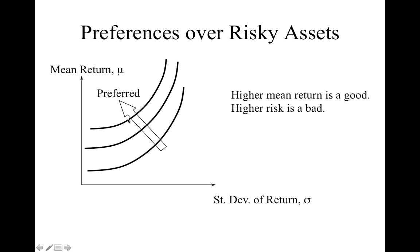Higher mean return is good, higher risk is bad. So this is an example of one good and one bad, and indifference curves between these two kinds of commodities will always be upward sloping. We are still in the realm of microeconomics, using classic microeconomic theory to specify preferences of consumers — here applied to risky assets.